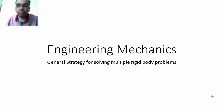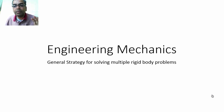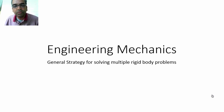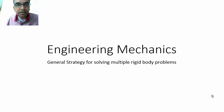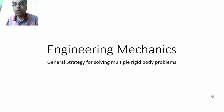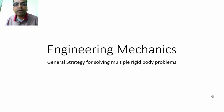Today we are going to see how to deal with a general problem solving strategy when you have multiple connected rigid bodies. So this could be what are called frames, then later we will see specialized rigid bodies called trusses and so on. So all of them have the same solution strategy and I am going to teach you how to do that along with an example.